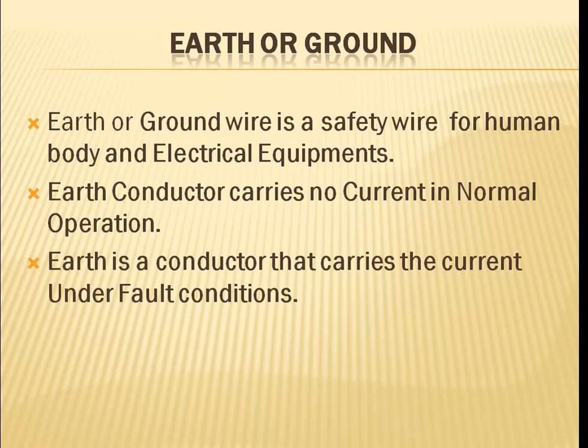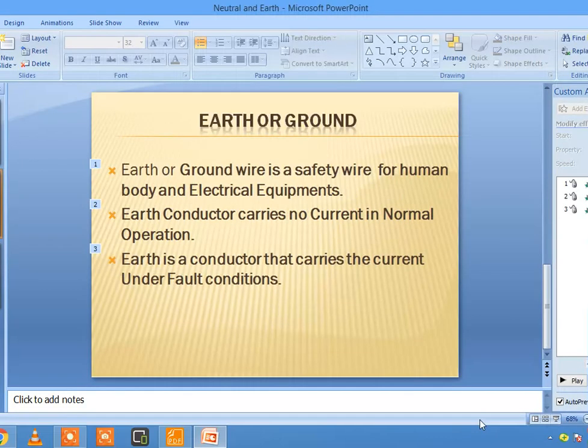We use the earth wire in abnormal condition only — when a fault occurs in our system, the fault current transfers through the earth wire.